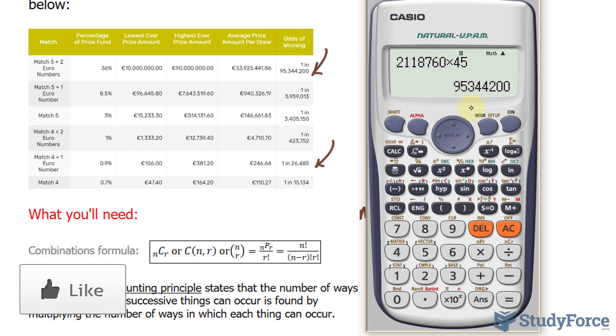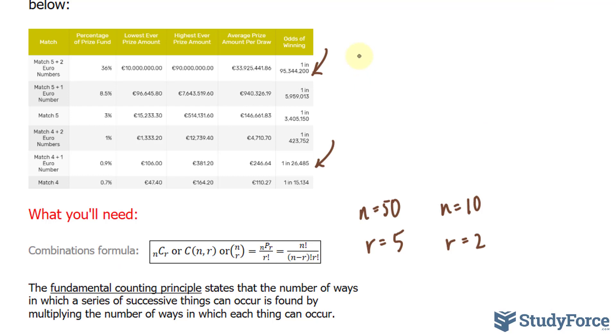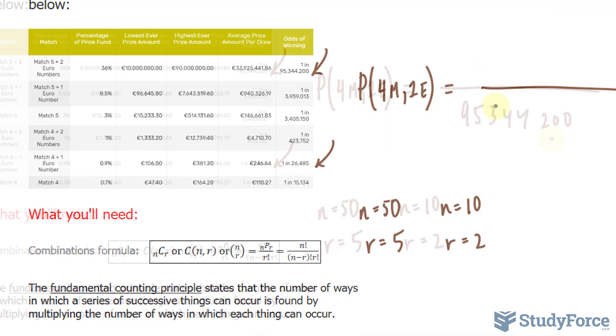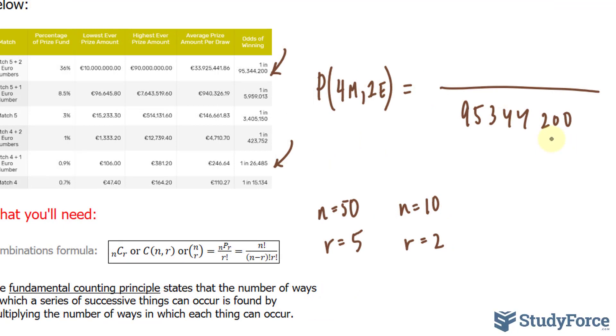What about the probability of getting 4 numbers and 1 euro number? Well, for that, you need a little bit more math. And to represent that mathematically, I'll write down the probability of 4 main numbers and 1 euro number is equal to the total number of combinations which we found in our previous calculation, 95,344,200. And now we need to find the number of combinations for picking 4 and 1 euro.